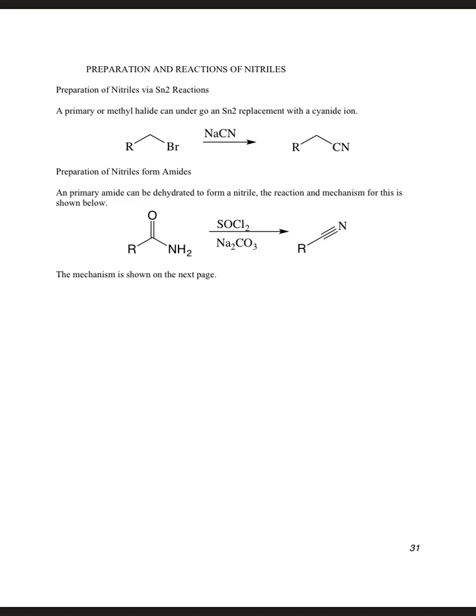How can we make a nitrile? Main way is going to be an SN2 displacement of an alkyl halide. Primary or methyl halide, we can add CN- to it and make the cyanide.